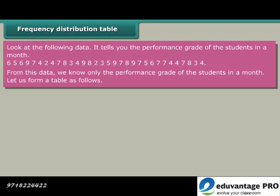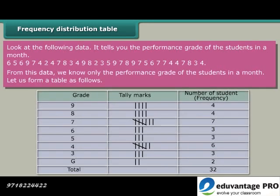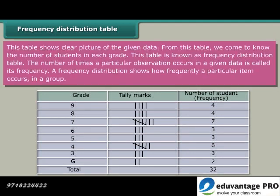From this data, we know only the performance grade of the students in a month. Let us form a table as follows. This table shows clear picture of the given data. From this table, we come to know the number of students in each grade. This table is known as Frequency Distribution Table. The number of times a particular observation occurs in a given data is called its frequency. A Frequency Distribution shows how frequently a particular item occurs in a group.